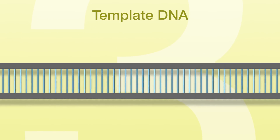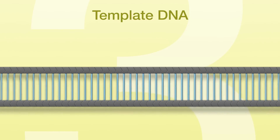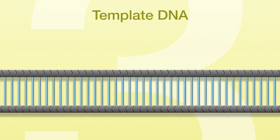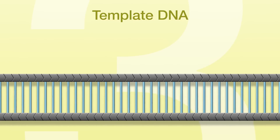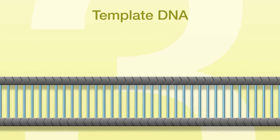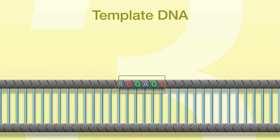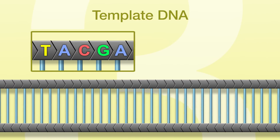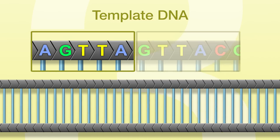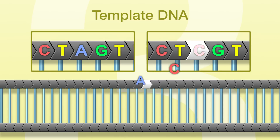CASP assays can be designed to genotype specific SNPs and indels. In this example, the DNA contains a single nucleotide polymorphism, referred to as a SNP. A SNP refers to a single base in the DNA sequence that can differ between individuals. For the purpose of this video, the SNP base can be either an A or a C.